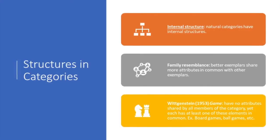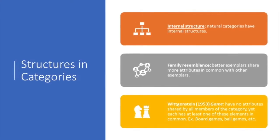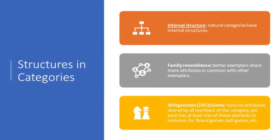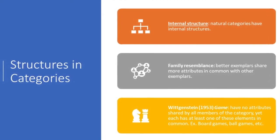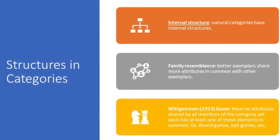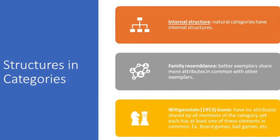Structures in categories. Only natural categories have internal structures like family resemblance and typicality gradients. Family resemblance are where better exemplars share more attributes in common with other exemplars.